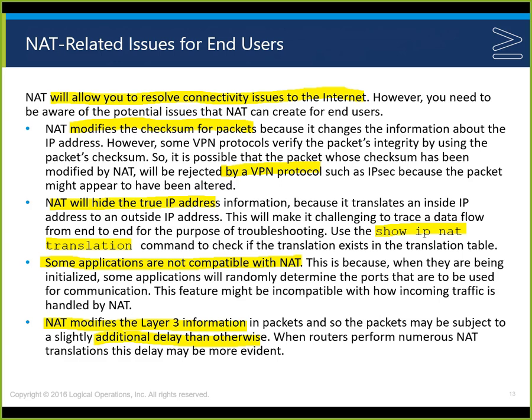It's possible that a packet whose checksum has been modified by NAT will be rejected by VPN protocols like IPsec because the packet might appear to have been altered — it might look like a man-in-the-middle attack. NAT hides the true IP address information. When we talked about NAT as a security mechanism, what it hides is not just the private IP address but our internal network structure — what we look like inside our private network.